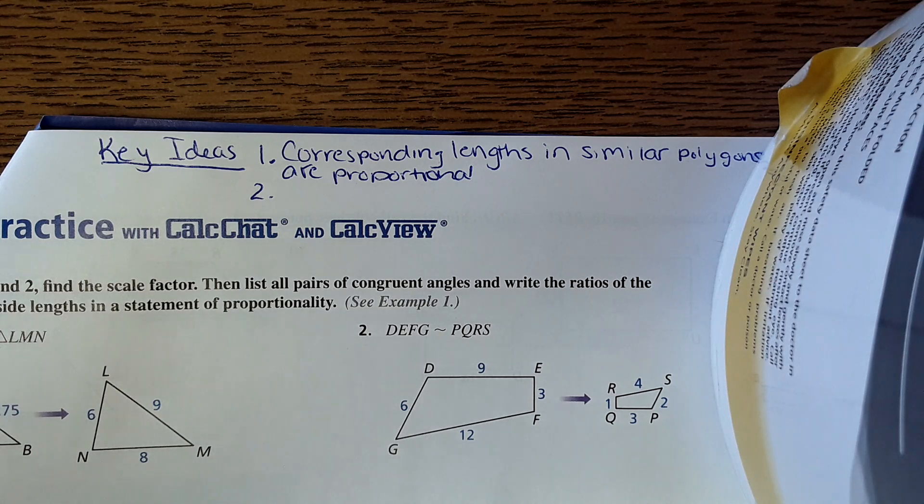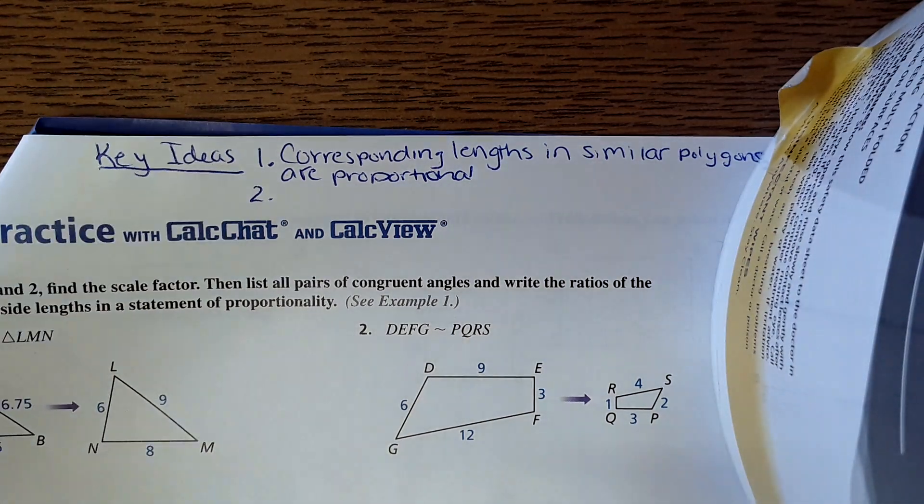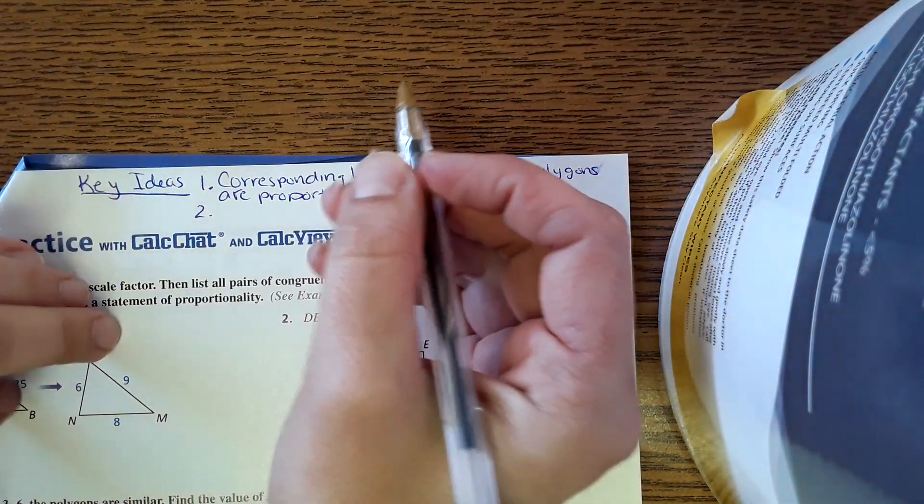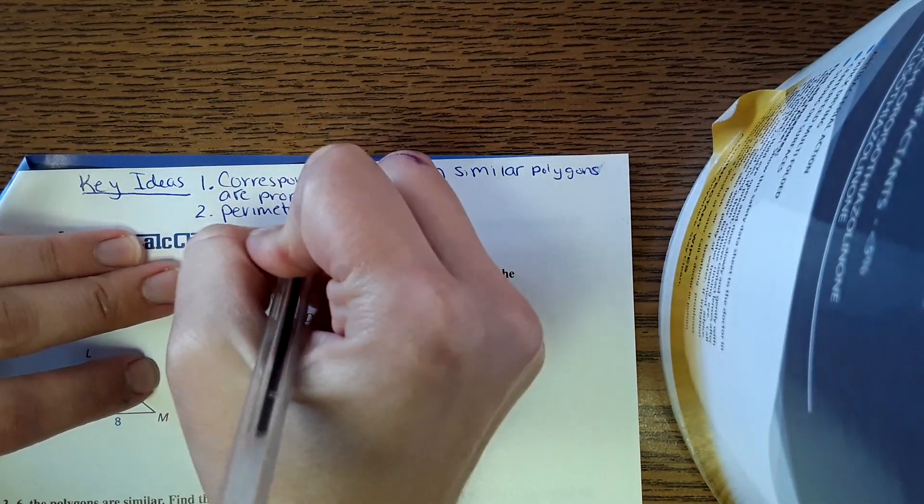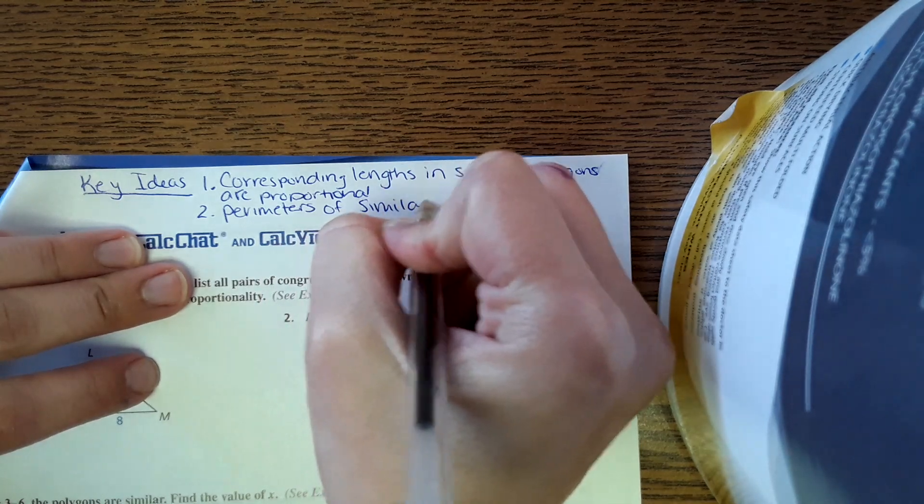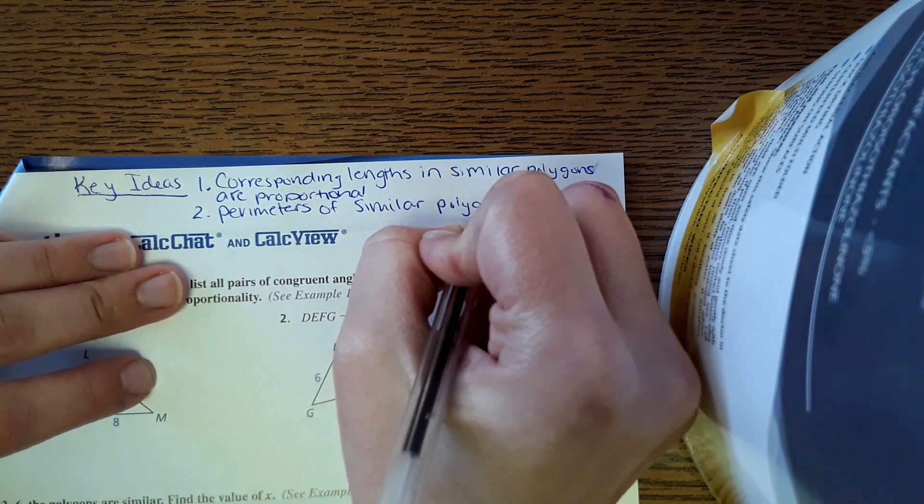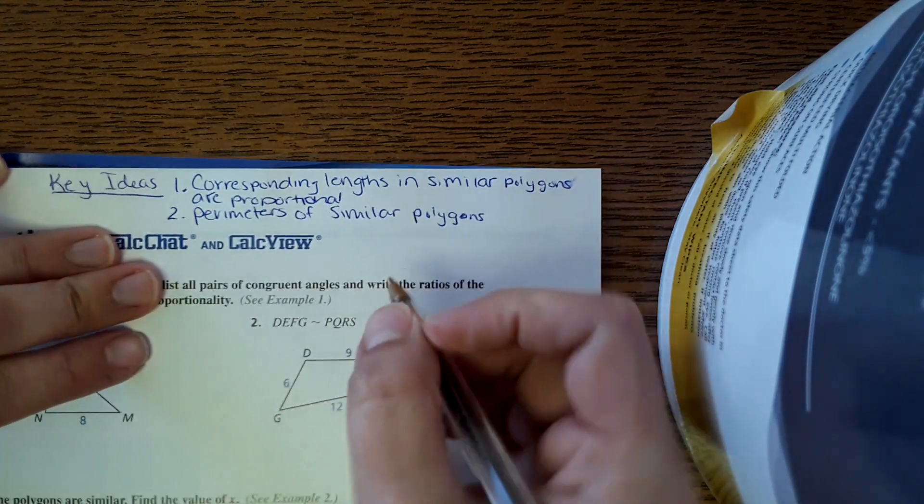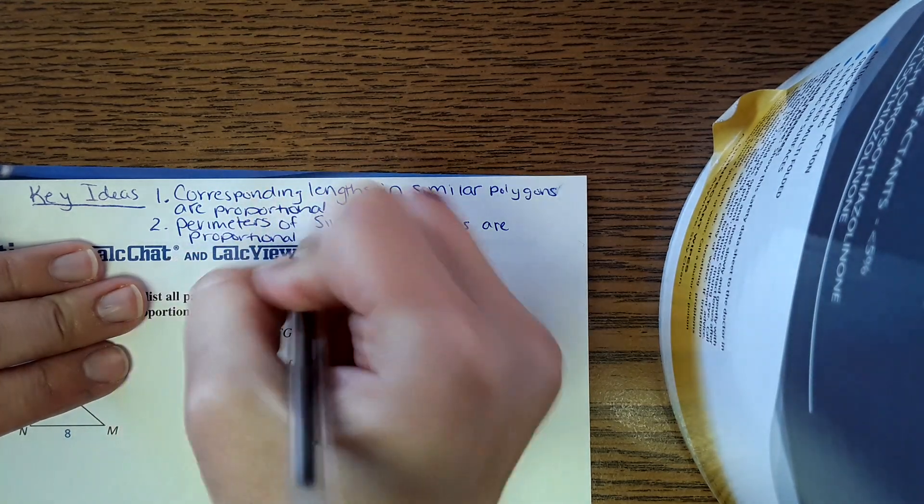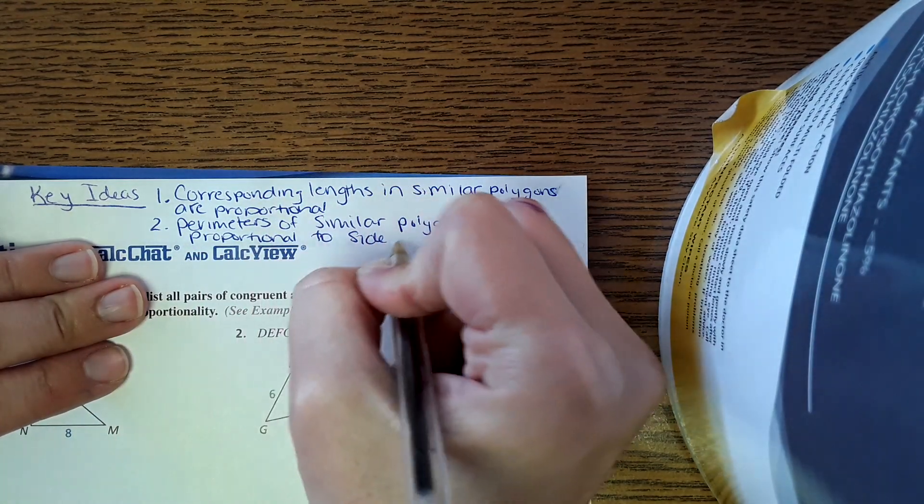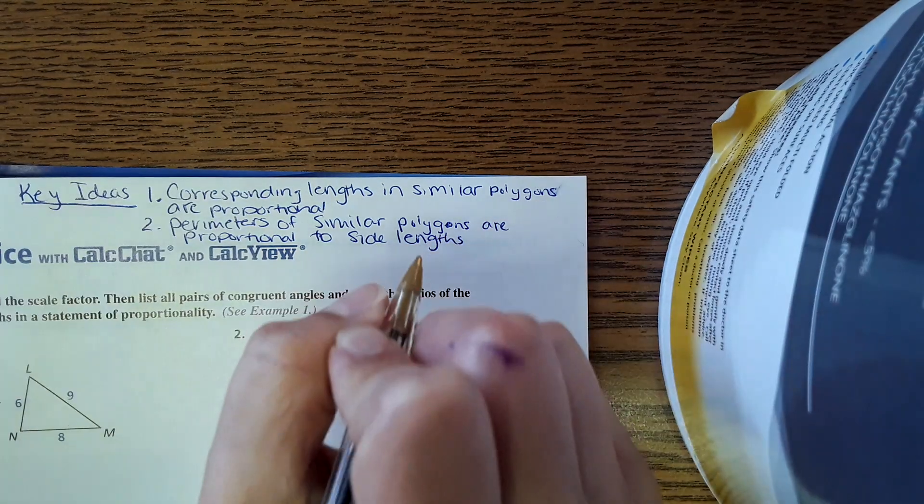The second key idea is perimeters of similar polygons are proportional as well. I'm going to zoom out just so I can write perimeters of similar polygons are proportional to side lengths, and we'll apply that in problems.